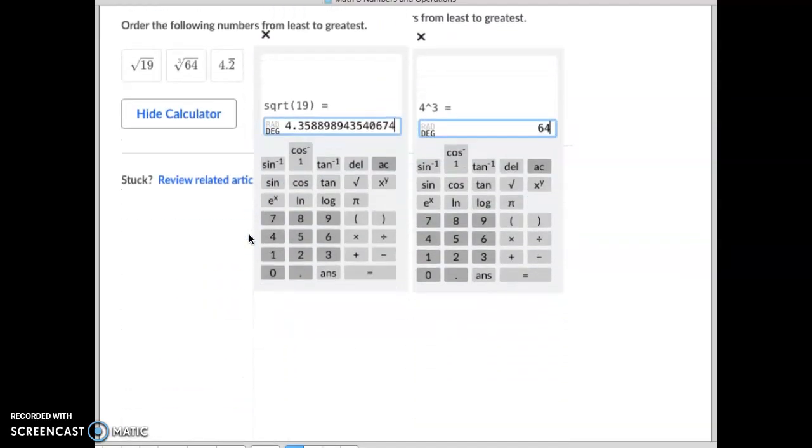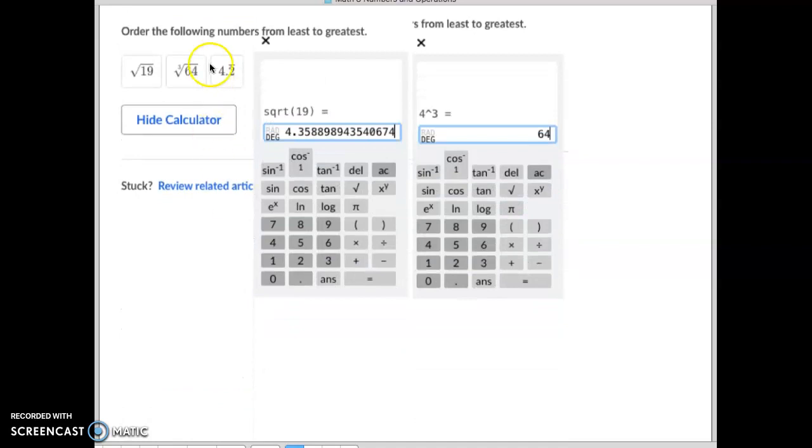And then finally the third type. You got to put these in order from least to greatest. First of all, you all know what 4.2 repeating is, so I don't need to figure that out. But I do need to figure these two out. So the square root of 19 equals 4.358. So that's definitely bigger than 4.2 repeating.